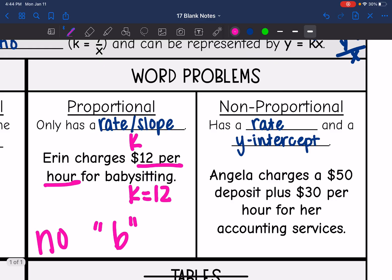Non-proportional, we are going to have a rate and a y-intercept. We have a b value. So this one here, it says Angela charges a $50 deposit plus $30 per hour for her accounting services. So we do have a b value, that initial charge of 50. That's why this one is non-proportional.